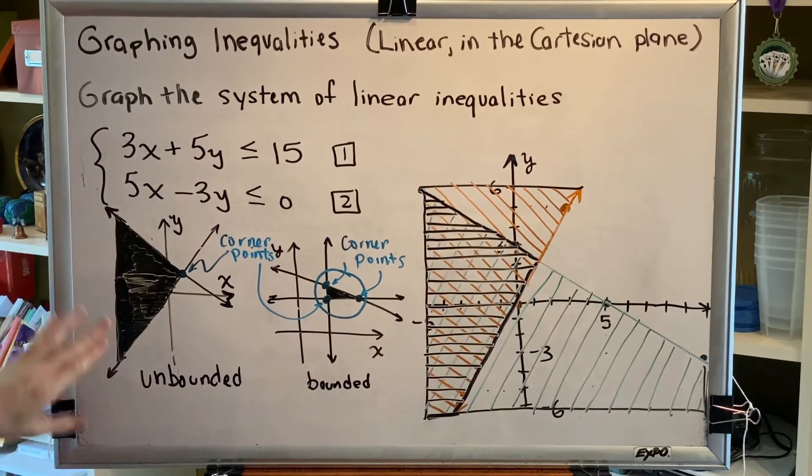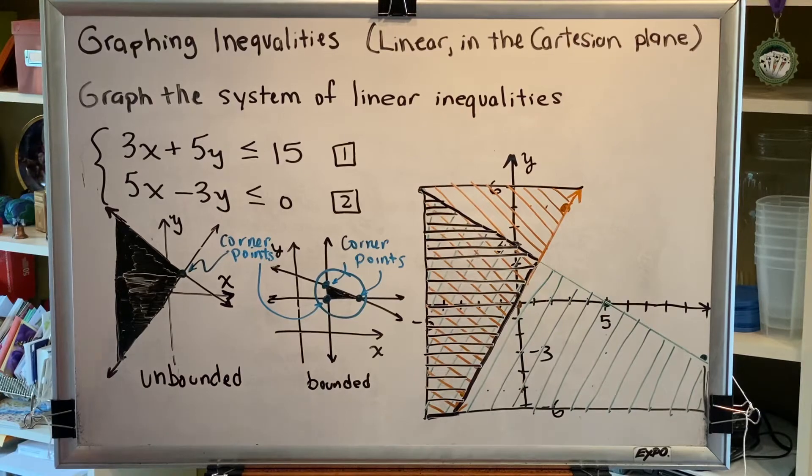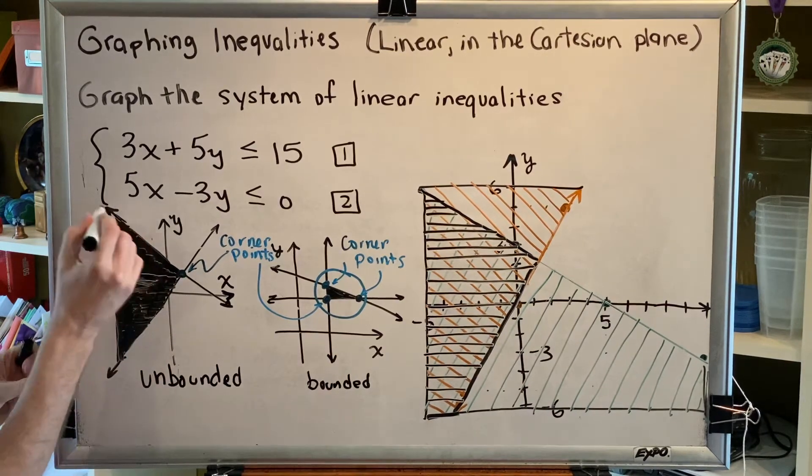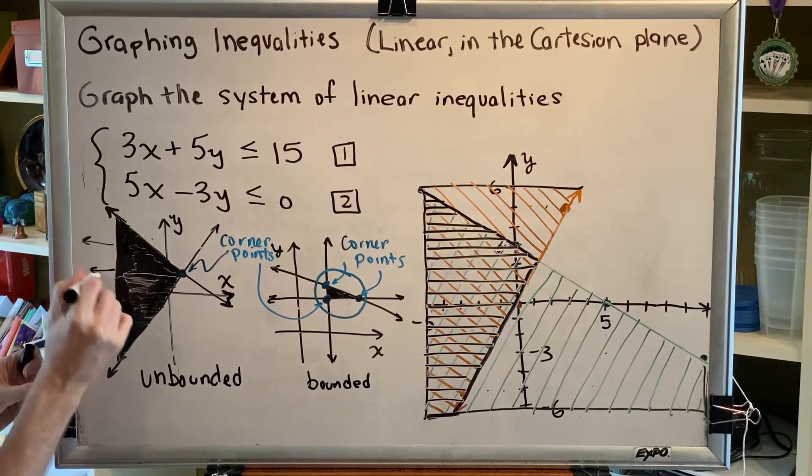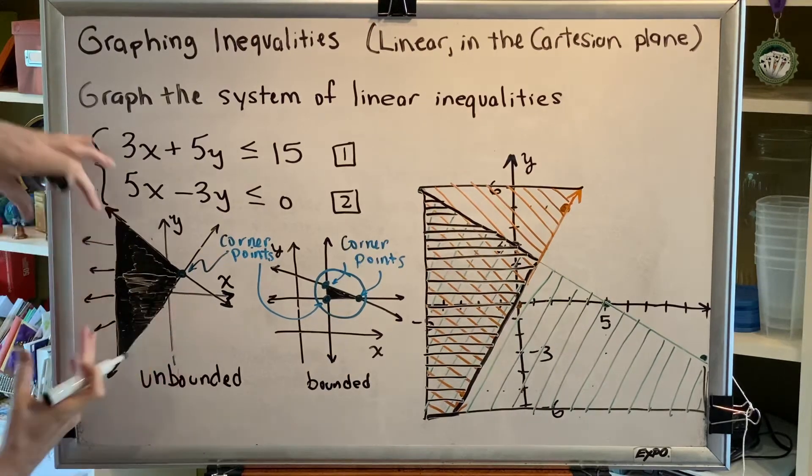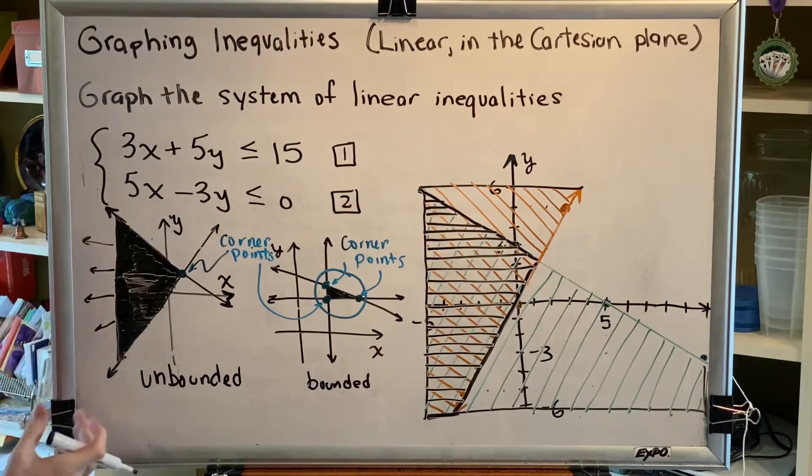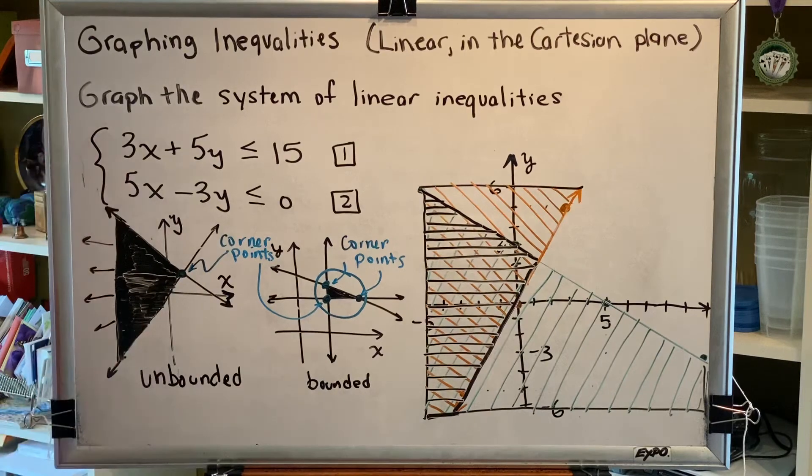This is referred to as an unbounded region, and the reason why is because this line goes forever, this line goes forever, and for that reason this region goes on forever. The only reason it appears to stop here is because we simply ran out of room in our graph grid, but if we made our graph grid larger we would see that this goes on forever.